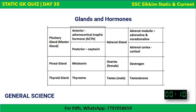Looking at different glands and hormones: the pituitary gland — known as the master gland — produces ACTH, oxytocin, and growth hormone. The pineal gland produces melatonin. The thyroid gland produces thyroxine. The adrenal cortex produces cortisol; adrenal medulla produces adrenaline and noradrenaline. The ovaries produce estrogen and progesterone; the testes produce testosterone.